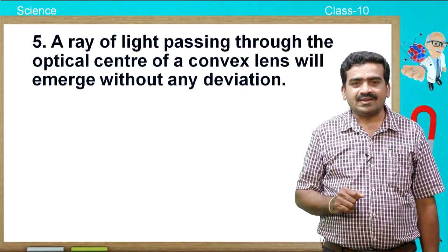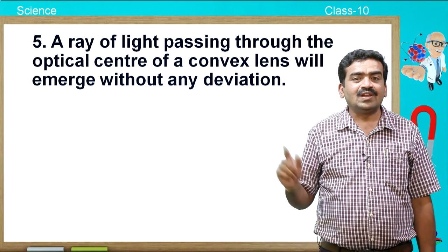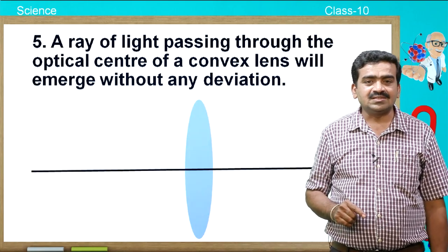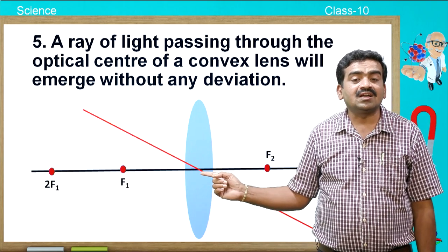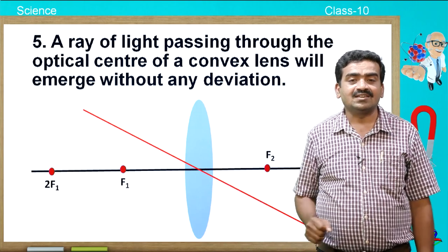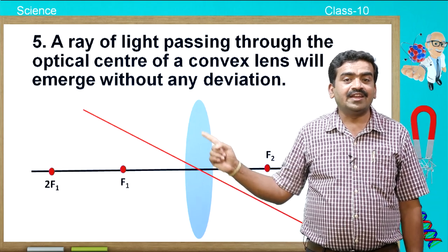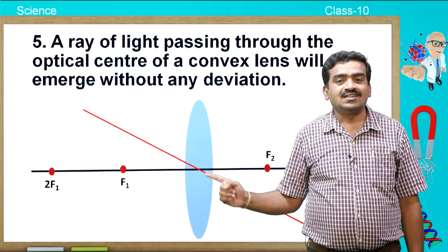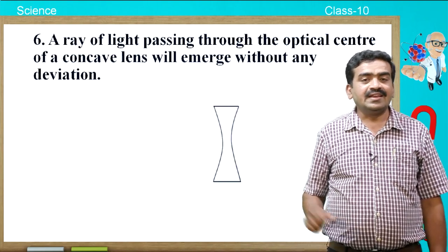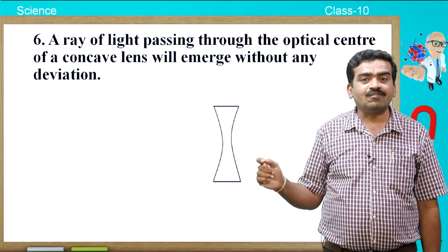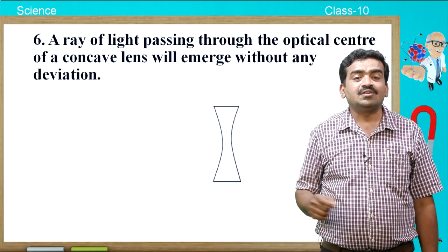The next important point is: a ray of light passing through the optic center of a convex lens will emerge without any deviation. That means if it passes through the optic center, there is no deviation or refraction of the ray of light. Apart from this, if the ray of light passes anywhere else in the convex lens, it is going to be refracted and bent according to the incident ray.